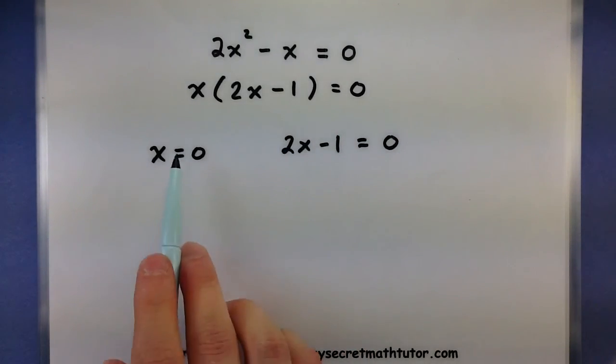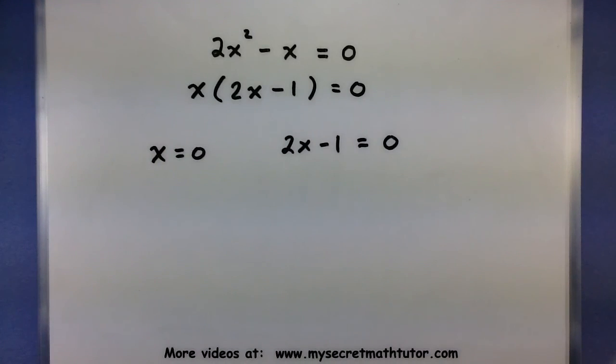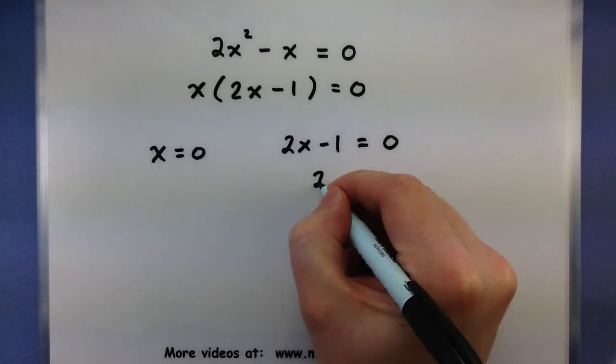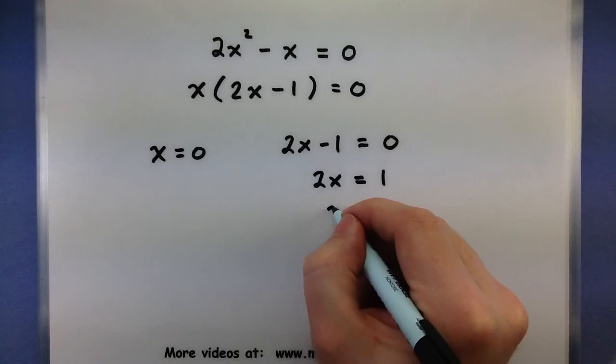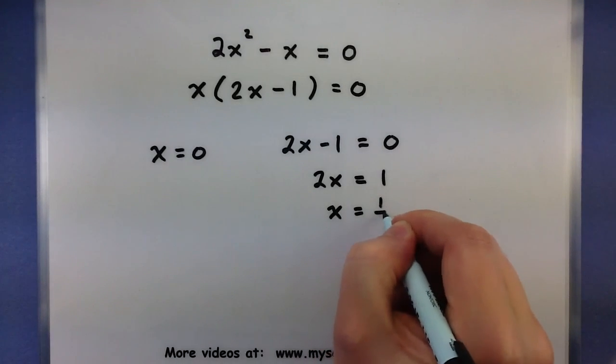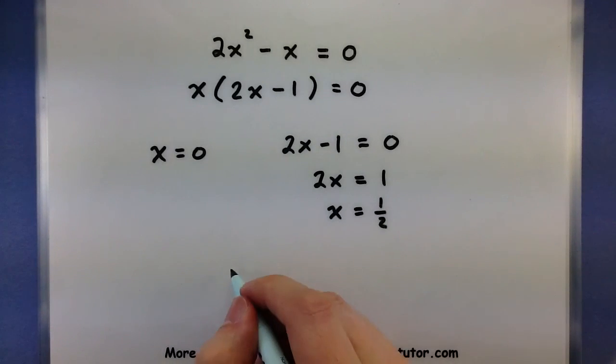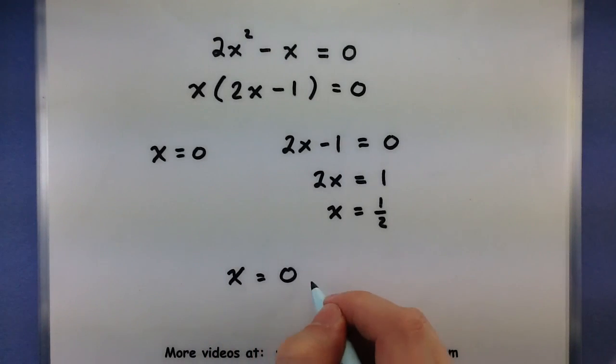Now the good part is this one, it's already solved. x is equal to 0. And now we only have to solve this one. So add 1 to both sides and divide by 2. So our two solutions for this one are x equals 0 and x equals 1 half.